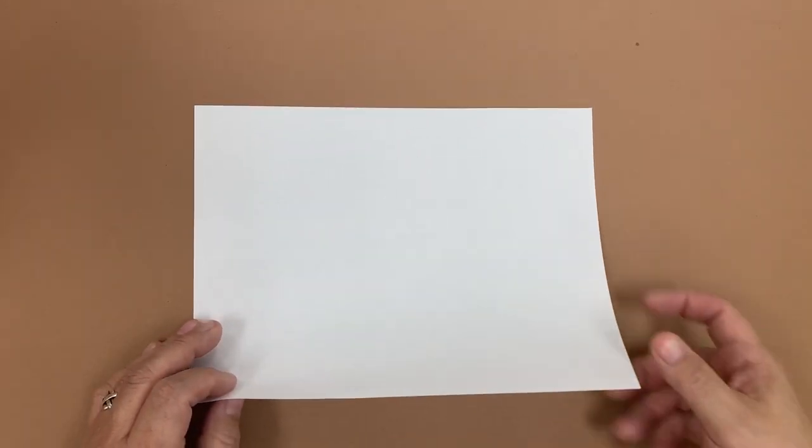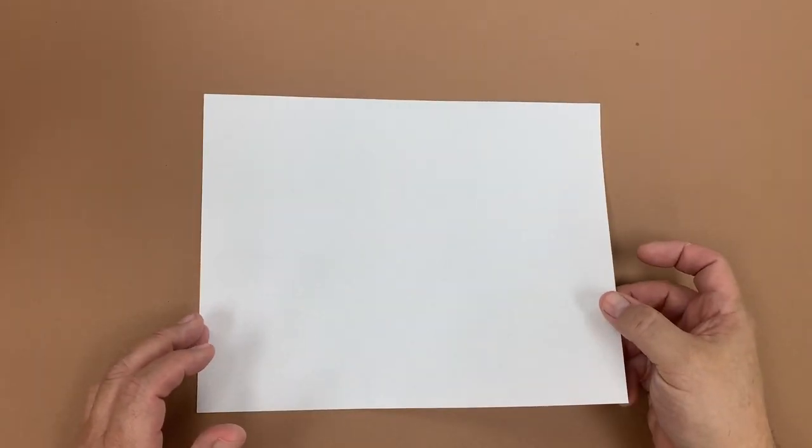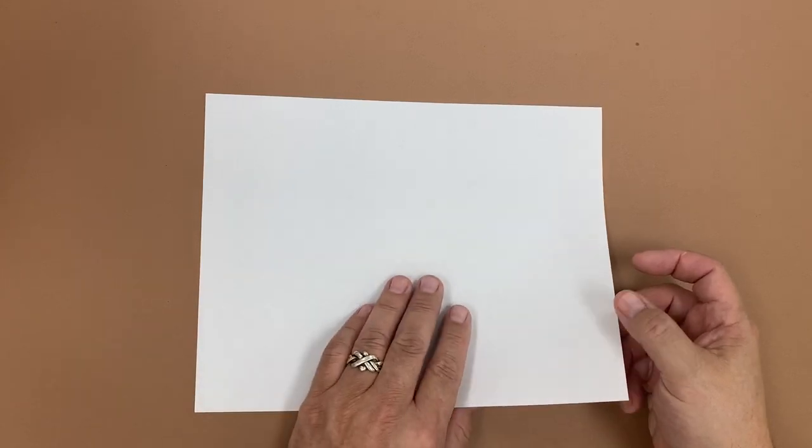So first off, we're going to need a square, and I've just used a plain piece of copy paper, which is cheap and easy to get, and thin enough that it works really well.